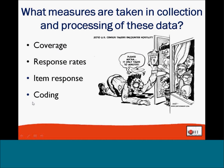Dr. Norris will be talking about the difference between these two data sources a little bit later. One key advantage of census and ACS data is data quality — they have high coverage rates. In terms of the census, they cover the full population, and in terms of the ACS, a representative sample that is really trying to get at the full population of people living in the United States.